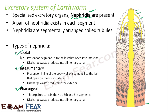Let us quickly see what each of them does. Septal nephridia are present on segments 15 to the last and open into the intestine, discharging waste products into the alimentary canal. This yellow colored structure you see here is nothing but the alimentary canal or digestive tract. So these septal nephridia take all the waste products and put them into the alimentary canal, and that waste product will then go out through the anus.